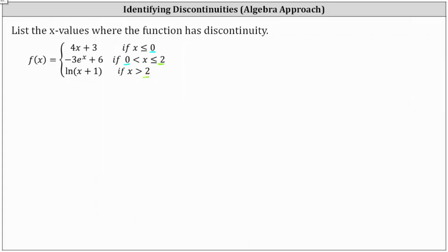To check if the function is continuous at x equals zero, we need to check if 4x + 3 equals negative 3e^x + 6 when x equals zero. We also need to check if negative 3e^x + 6 equals the natural log of (x + 1) at x equals two.